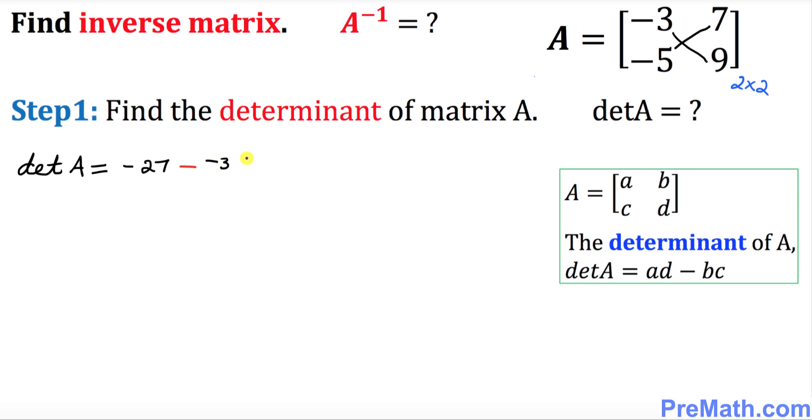So now, once you have two negative signs next to each other, it becomes positive, so that is simply going to become negative 27 plus 35, and that's going to give you positive eight.